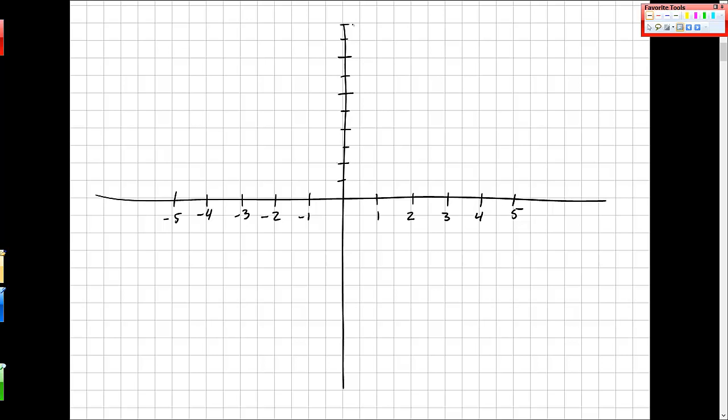Because I know I have this -10, right? So I have 2, 4, 6, 8, 10. But you're welcome to just label every other tick mark if you want. So -2, -4, -6, -8, -10.